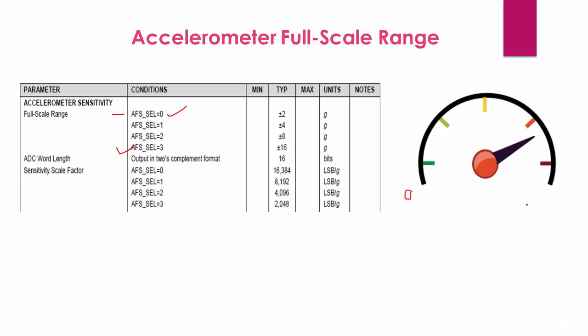For example, if I select this, then the accelerometer can give the acceleration g values up to 16g. Up to 16g of readings are possible.